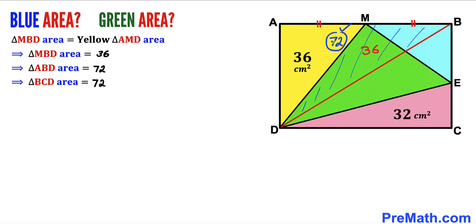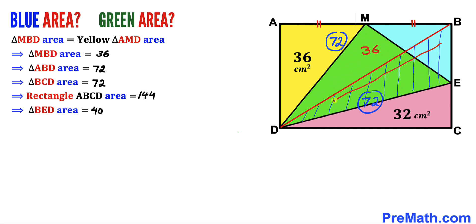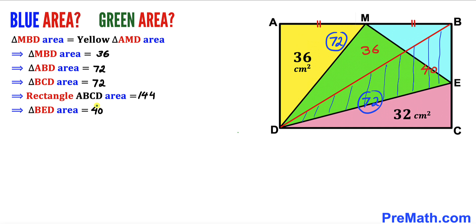Since the diagonal divides the rectangle into two equal triangles, the area of triangle BCD is also 72 centimeters square. Therefore the area of the whole rectangle ABCD is 72 plus 72, giving us 144 centimeters square. Now focusing on triangle BCD: its area is 72, and we know the pink triangle area is 32, so the area of triangle BED is 72 minus 32, giving us 40 centimeters square.